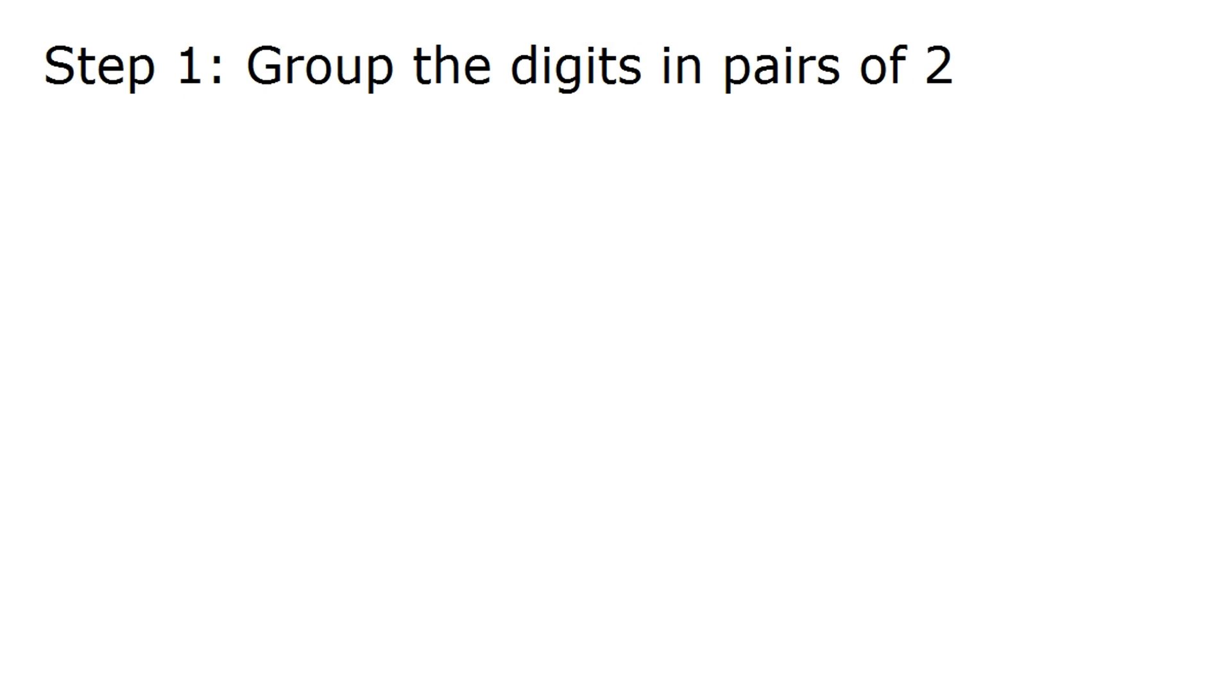Okay, so the first step is pretty easy. You just want to take whatever number you want to take the square root of and group it into pairs of 2. So for example, if your number was 84,765.2347, this is how you'd want to group it.